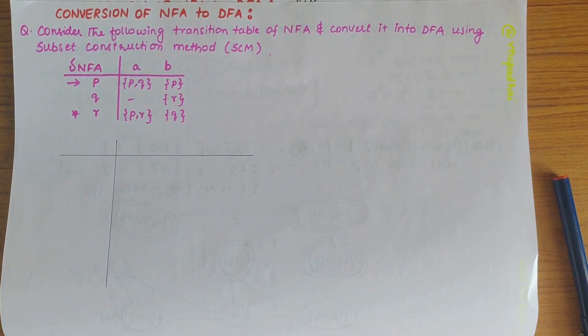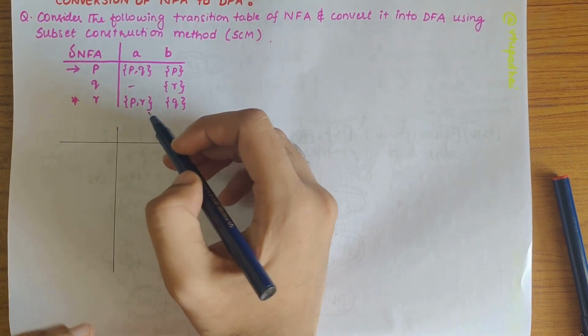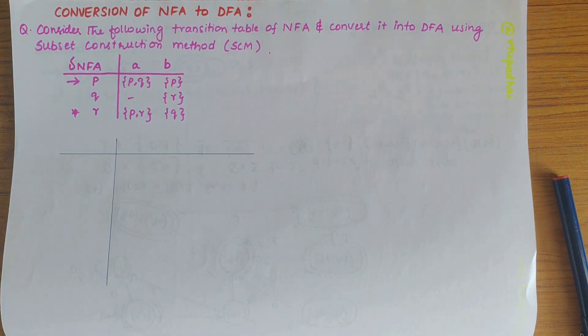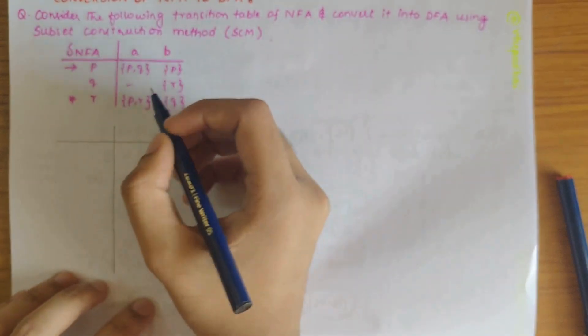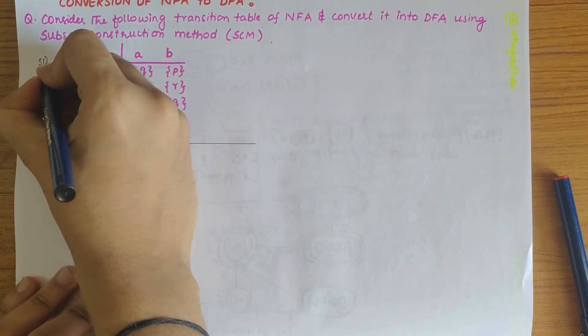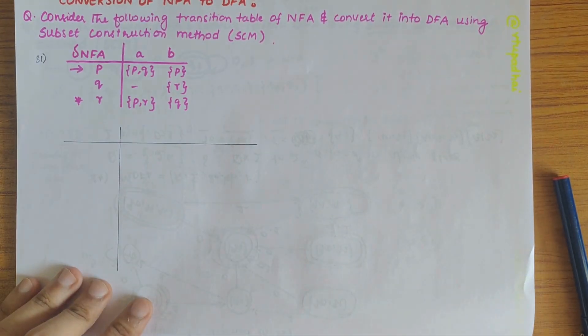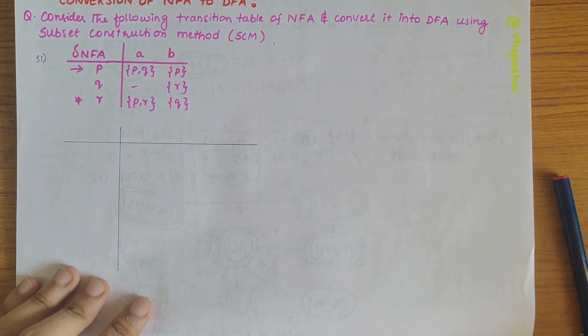In this video we will be looking into the conversion of NFA to DFA. Here the transition table is given, we have to convert it into DFA using subset construction method.